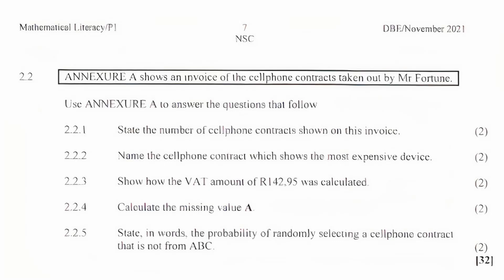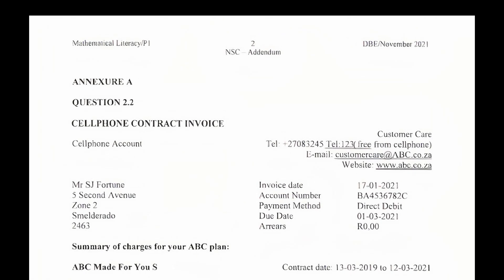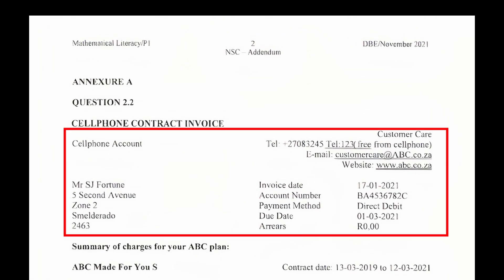In this video we'll be working through question 2.2 of Math Literacy Paper 1, November 2021. If you'd like a copy of this paper, the link is in the description below. Question 2.2: Annexure A shows an invoice of the cell phone contracts taken out by Mr. Fortune. As with most invoices, there is some information regarding the company and the customer near the top.